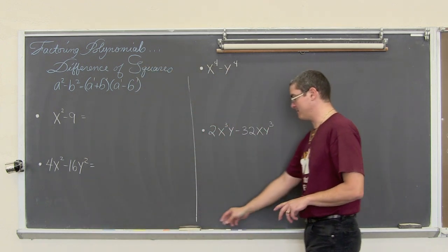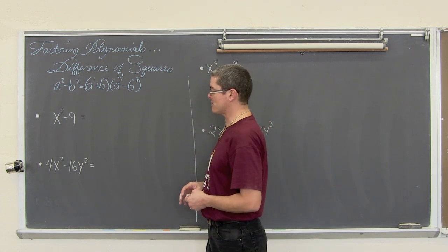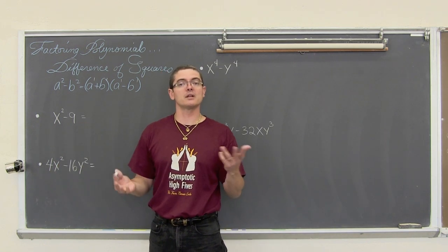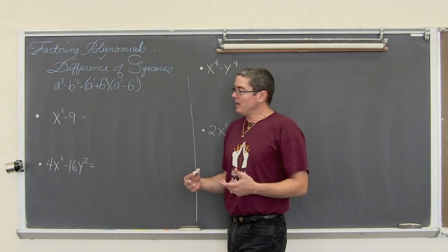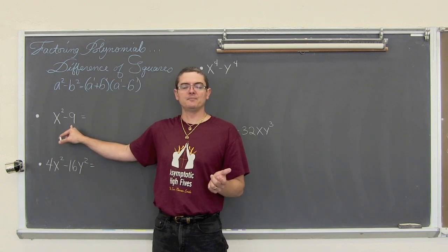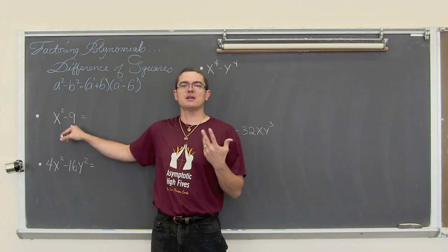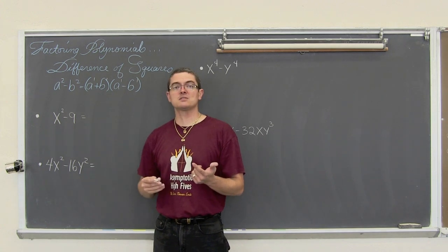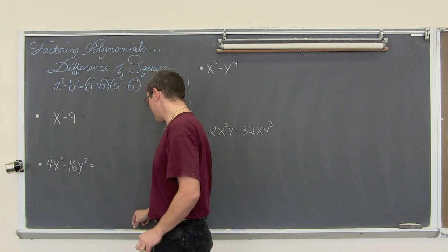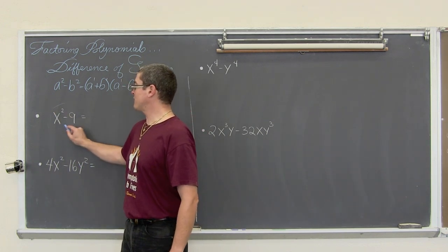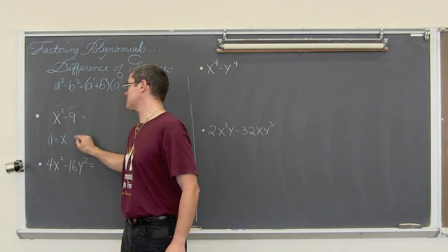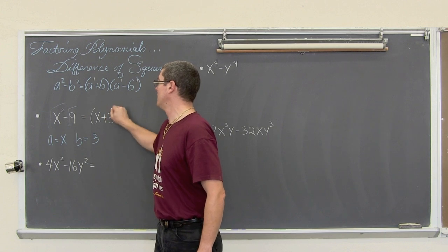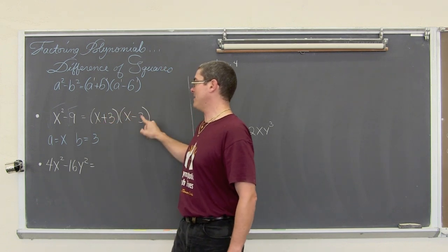I have four examples and a fifth bonus one. We have a difference of perfect squares. I know this is a perfect square because of the exponent of two, and nine is a perfect square because the square root of nine is three. If I look at x squared minus nine, I can envision the square root of the first and last term and identify that a is equal to x and b is equal to three, then fill in my pattern. So x squared minus nine is equal to x plus three times x minus three. It's a pretty simple one.